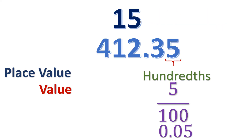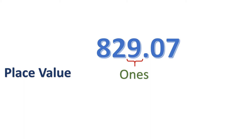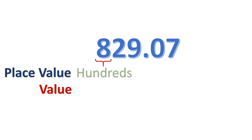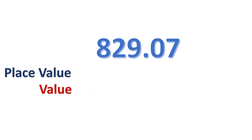Let's look at another decimal: 829.07. Starting with the ones place — the digit is nine, so there are nine ones, making the value nine. The tens place has a digit of two, so there are two tens, making the value twenty. The hundreds place has a digit of eight, so there are eight hundreds, making the value eight hundred.